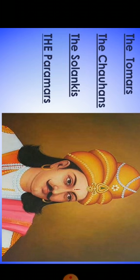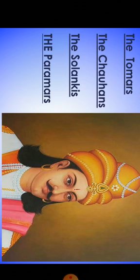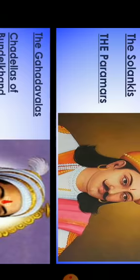The Chauhans ruled around the area of Delhi and Ajmer; they were also known as Chahamanas. Prithviraj Chauhan was the most powerful Chauhan ruler. Then we had the Solankis of Gujarat, popularly known as Chalukyas of Gujarat. Sidhraj was the most powerful Solanki ruler. After the Solankis, we had the Paramars, who were famous rulers that established their kingdom in the region around Malwa. The capital of Paramars was at Dhar. Bhoja Paramara was the most powerful ruler. The famous Nilakantheshwara temple at Udaipur was built by the Paramars.